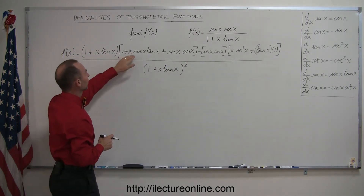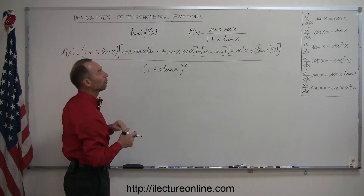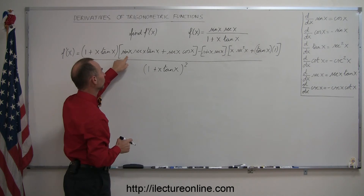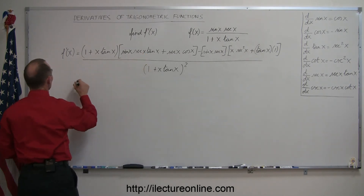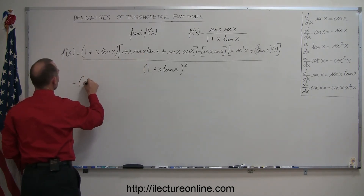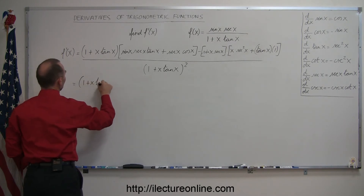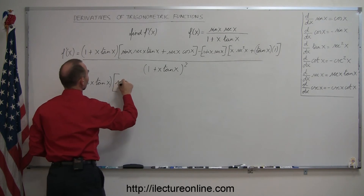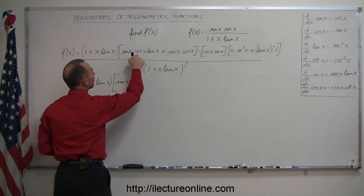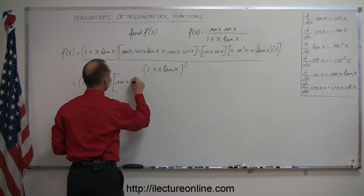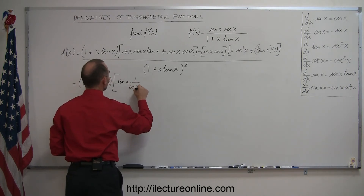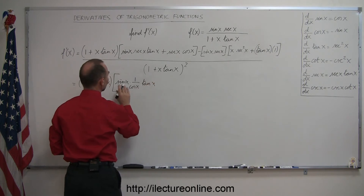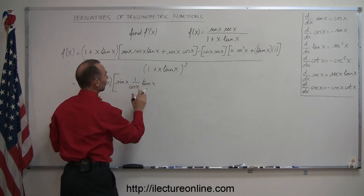We have sine of x times secant, which is 1 over cosine, so that gives us sine over cosine, which is tangent, and then we have another tangent — so that can be simplified. Let's try that: 1 plus x times tangent of x, times sine of x times secant of x — secant is 1 over cosine — times tangent of x. So this becomes tangent times tangent, or tangent squared.